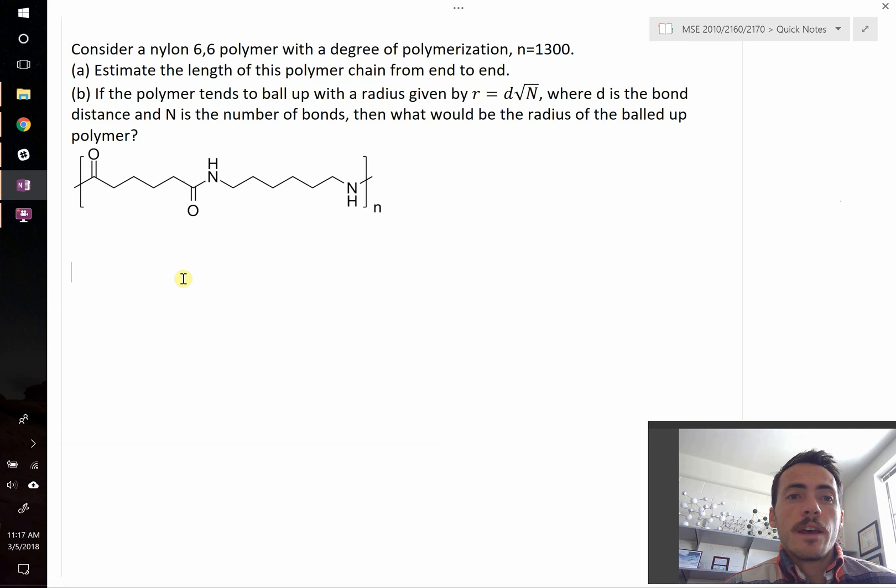Now, part A says, estimate the length of this polymer chain from end to end, if it was a straight line. Part B says, if the polymer tends to ball up with a radius of r equals d times square root of capital N, where d is the bond distance and N is the total number of bonds in the chain, what would be the radius of the balled up polymer?